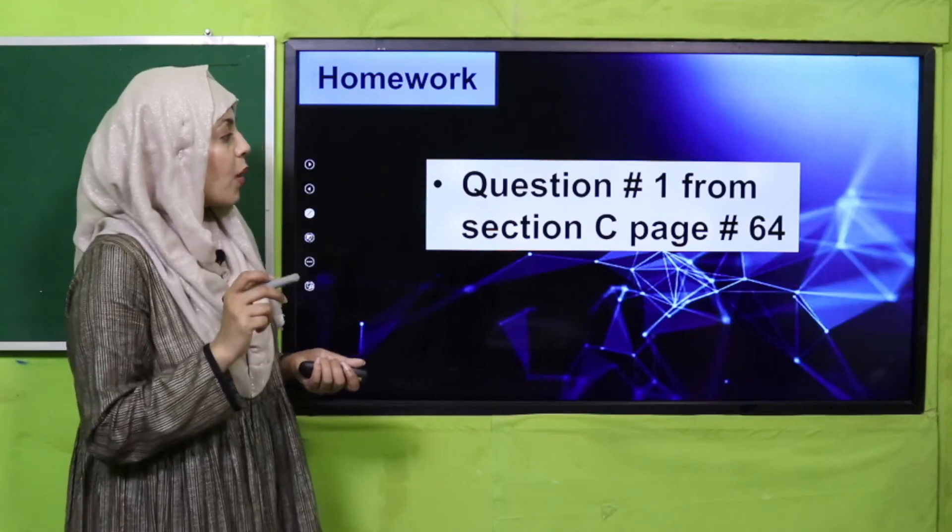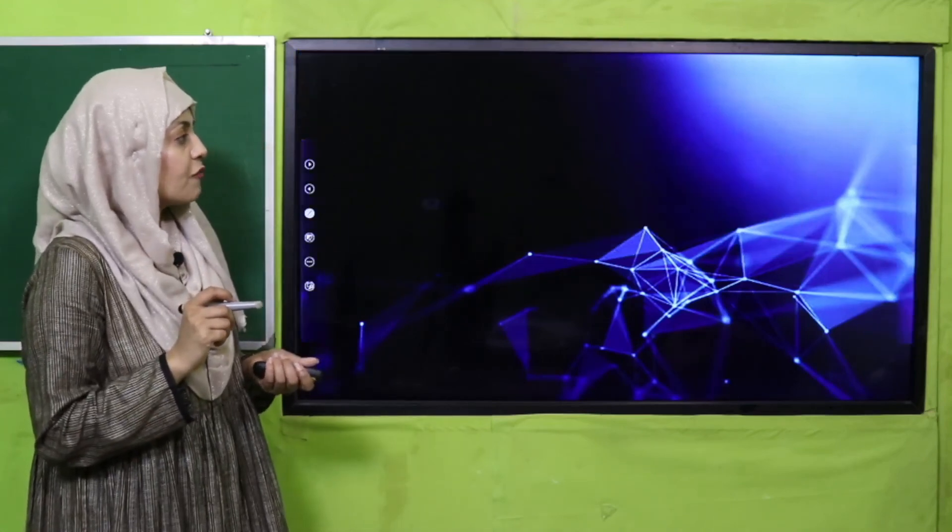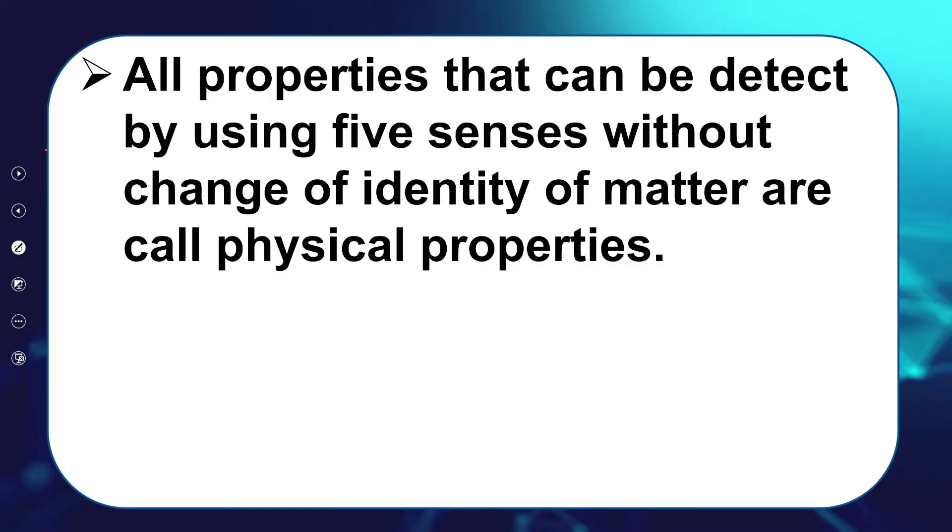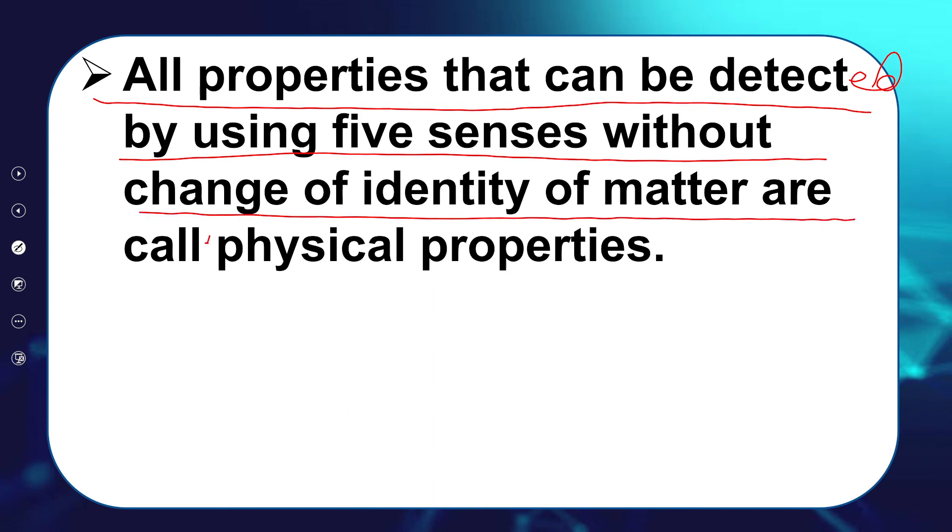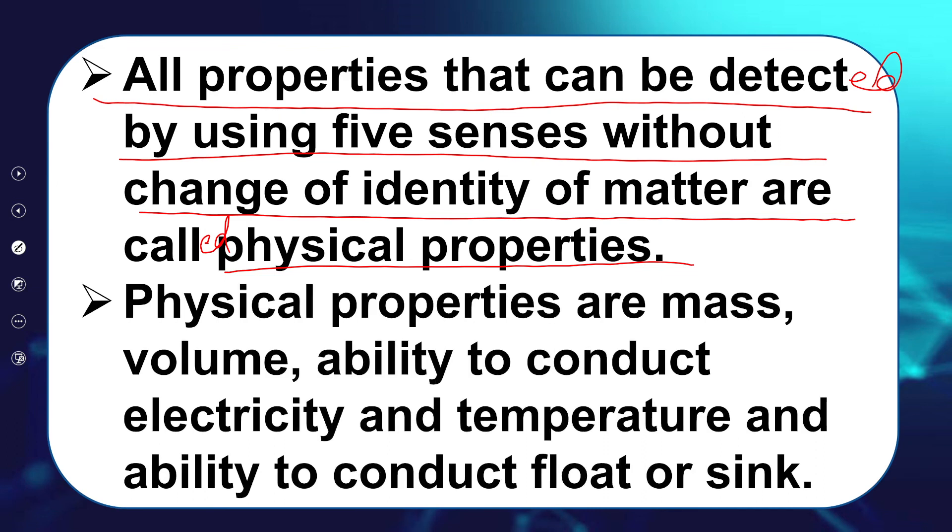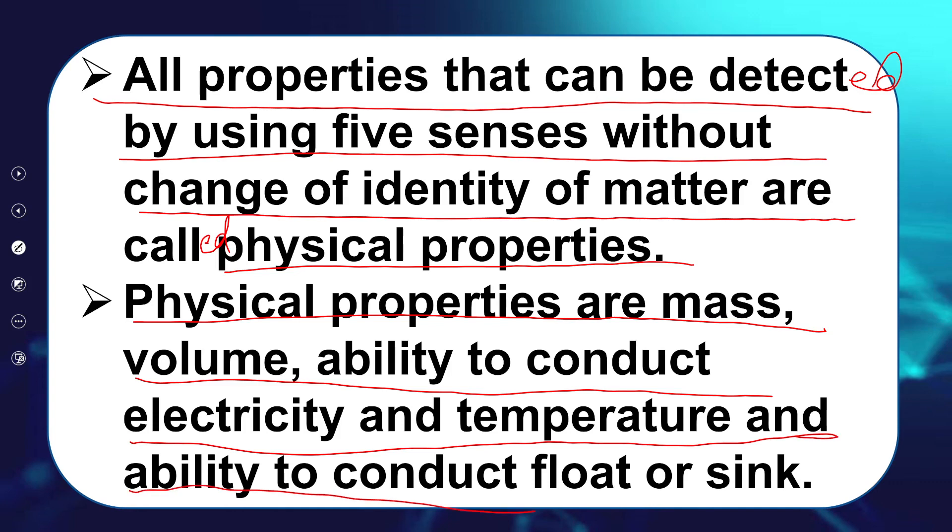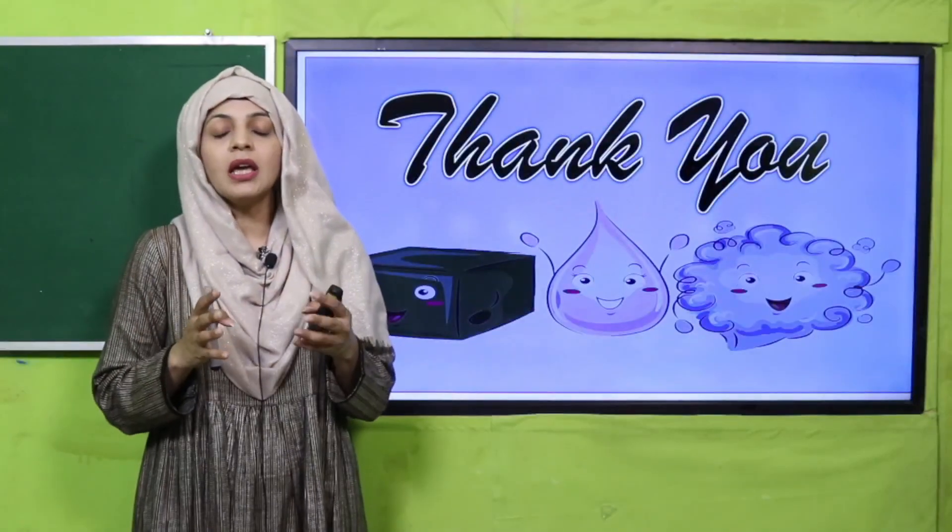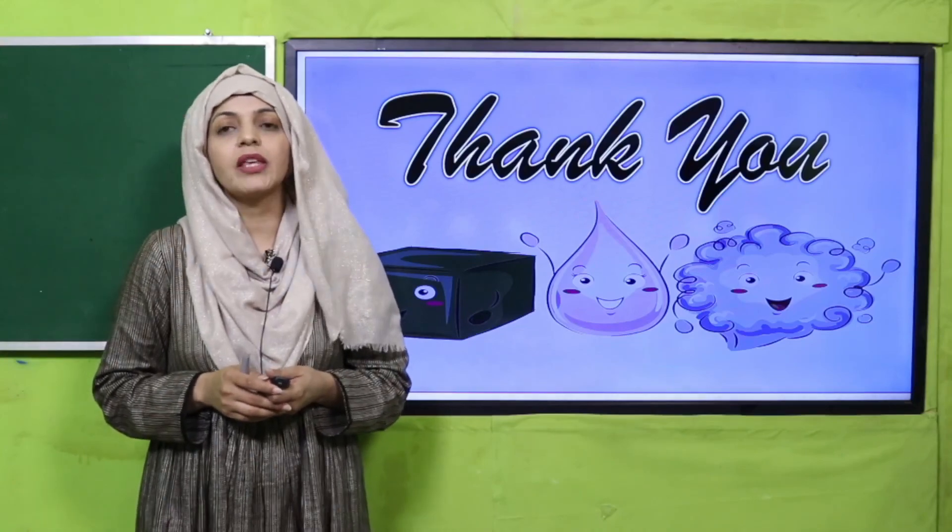For homework you will do question number one from section C, page number 64. And the wrap-up: today we have learned that all properties that can be detected by using five senses without change of identity of matter are called physical properties. Physical properties are mass, volume, ability to conduct electricity and temperature, and ability to float or sink. I hope now you know what are physical properties and how they vary. Keep everybody around you safe, have a good day, thank you so much.